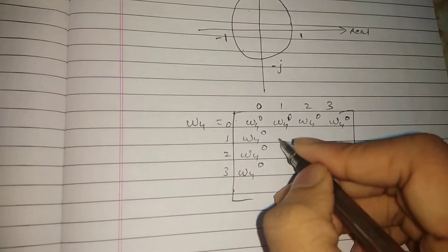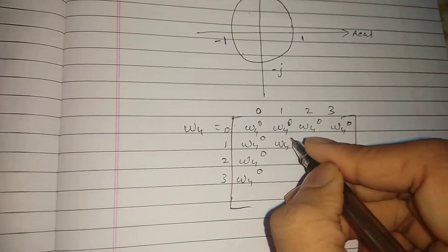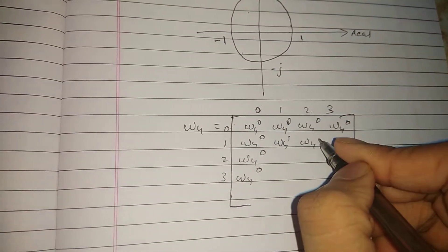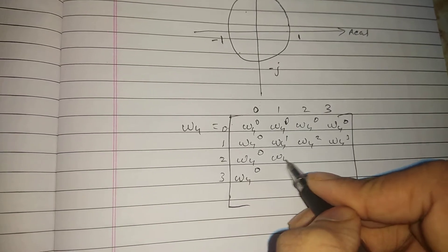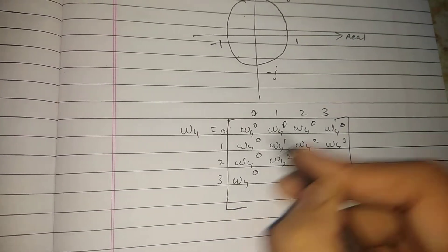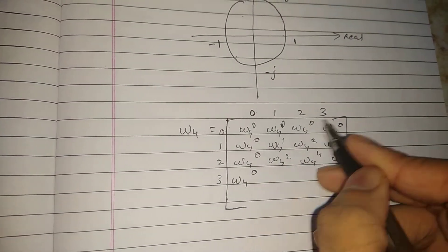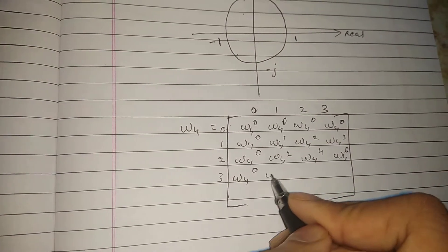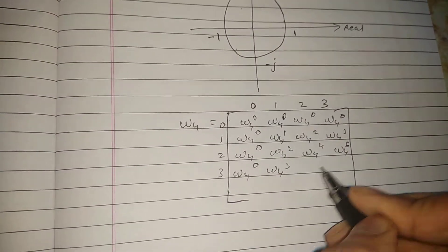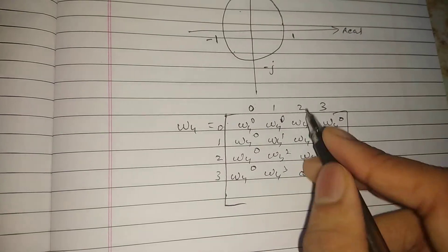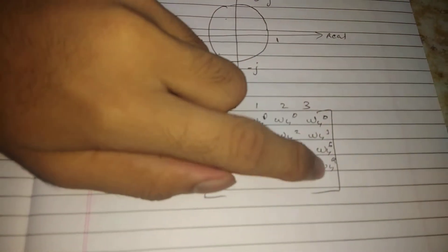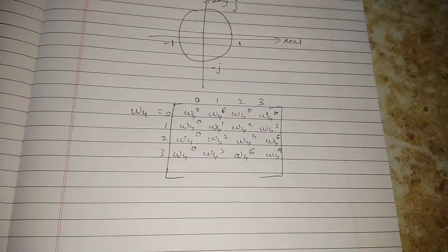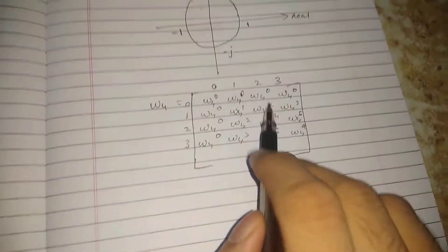Continuing to fill the matrix: the remaining entries are W4^1, W4^2, W4^3 in the second row, then W4^2, W4^4, W4^6 in the third row, and W4^3, W4^6, W4^9 in the fourth row, giving exponents up to W4^9.